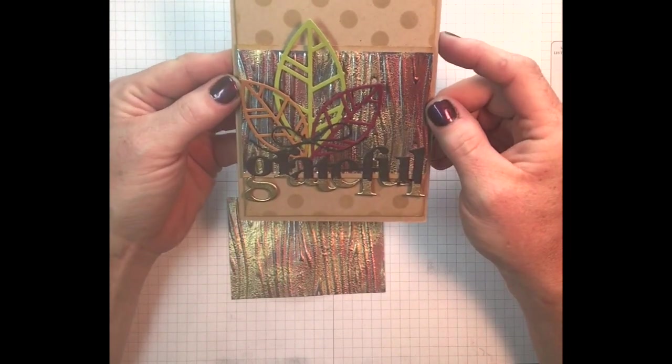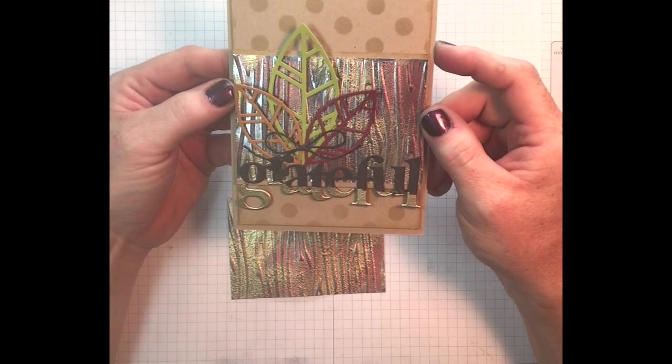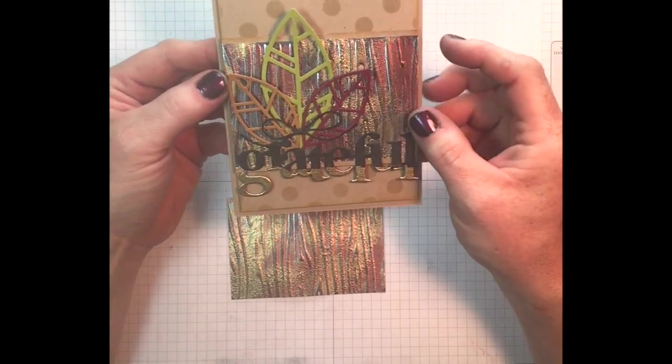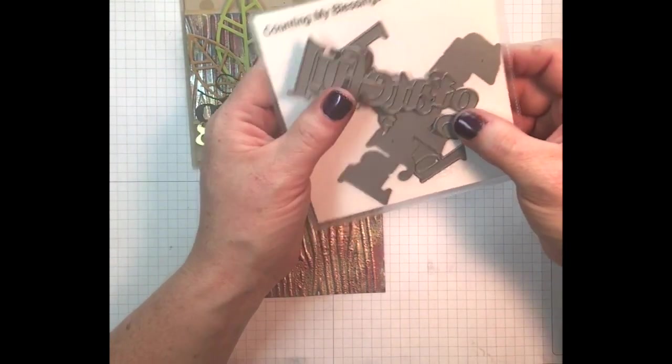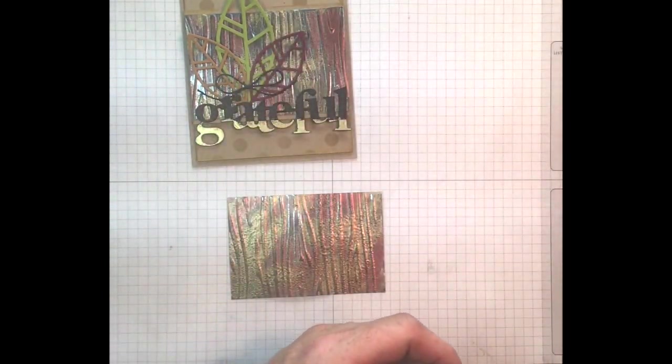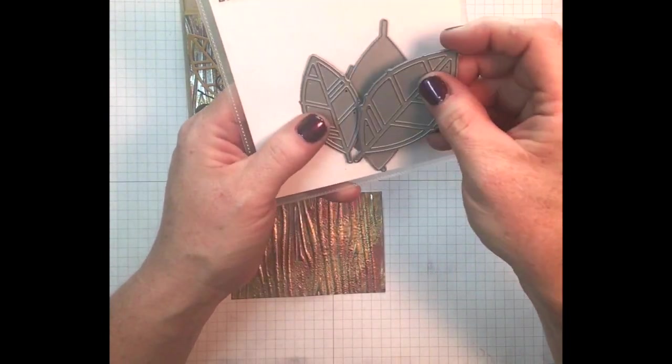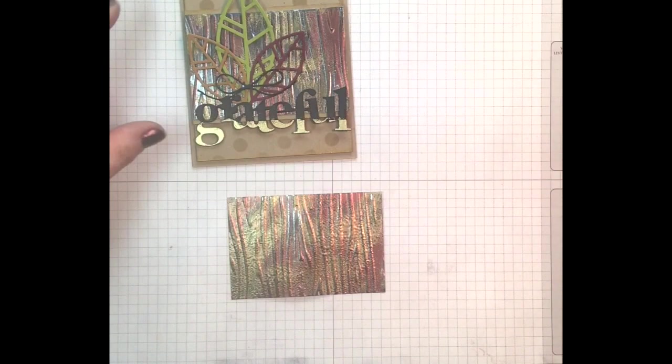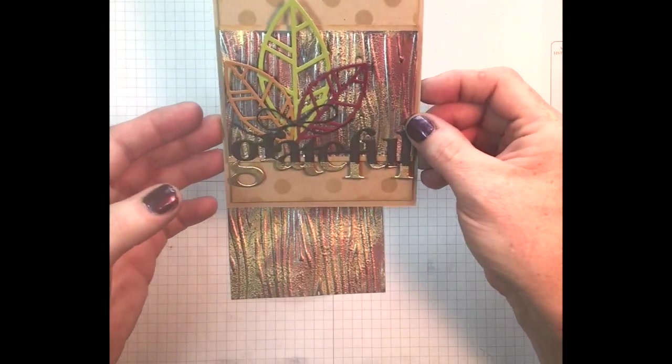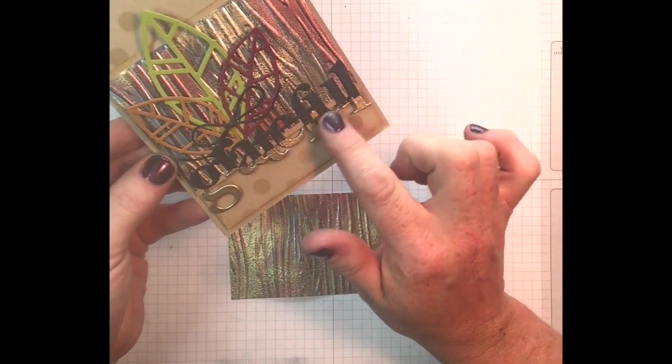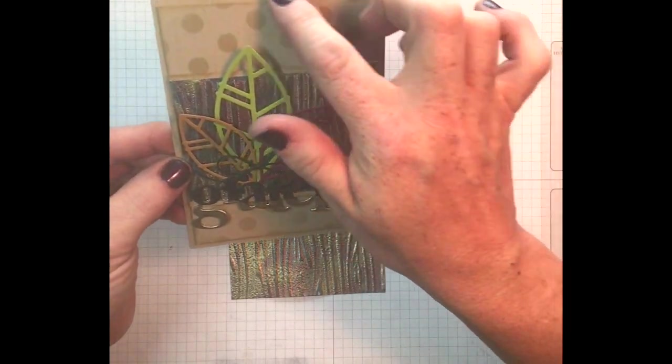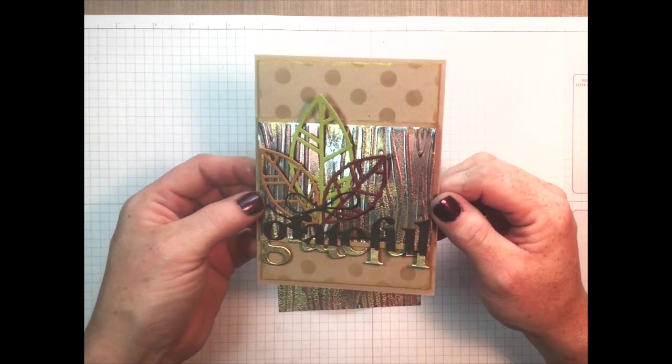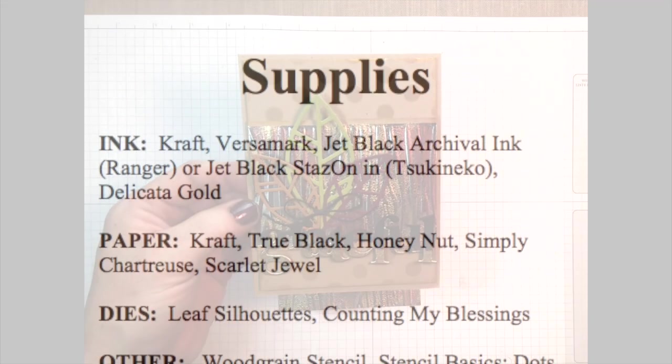To assemble my card, my finished card, I stenciled the background, the Stencil Basics dots on craft ink on craft cardstock, and I adhered my tarnished foil piece. The sentiment is the Grateful from the Counting My Blessings die set. And those pretty leaves are from the Leaf Silhouettes die set. I just used the open image ones. I die cut them out of Honey Nut, Simply Chartreuse, and Scarlet Jewel. I did emboss the lower part of the Grateful word in gold. I felt like it tied in some more of the gold, as well as brush the edges with some gold ink. But overall, it's a really fun technique, and I hope you get a chance to try it out. Thank you so much for your time.